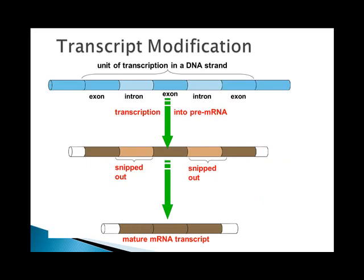Much of the DNA does not code for proteins. Some eukaryotic DNA has long non-coding portions called introns. They must be cut out and all of the exons spliced back together to make a properly functioning transcript.